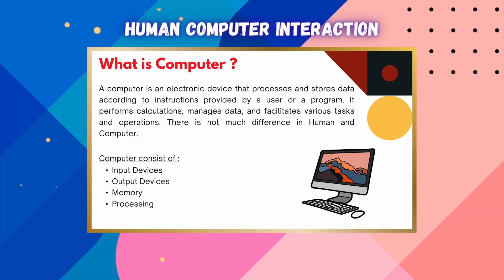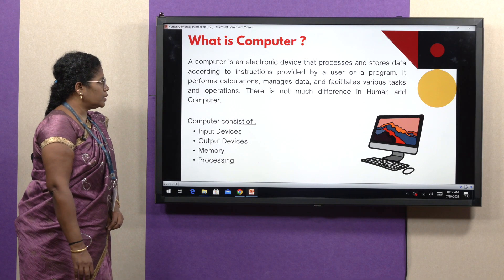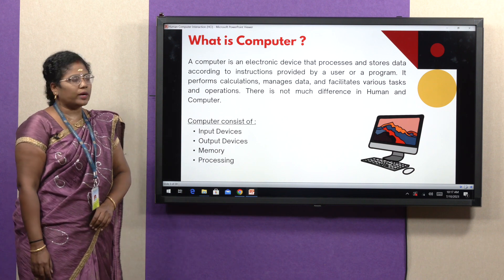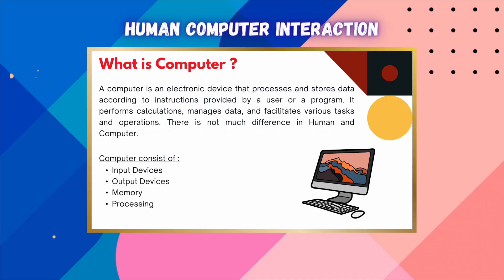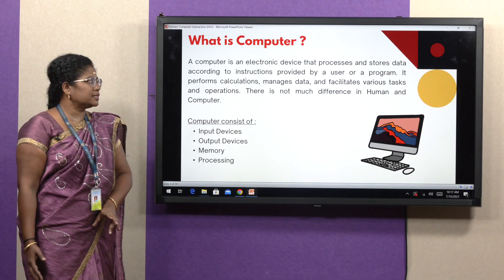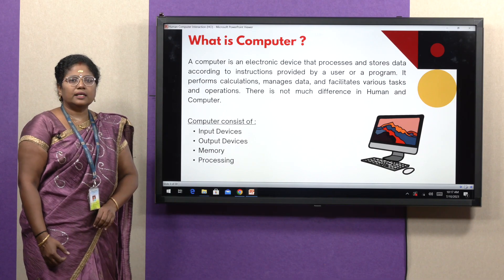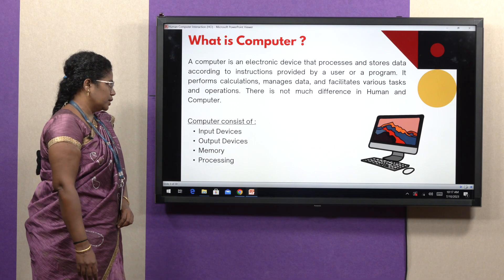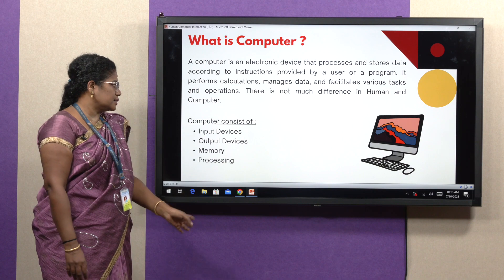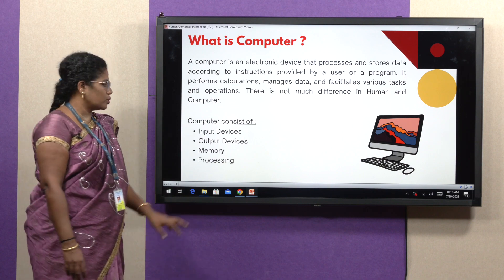A computer is basically an electronic device that processes and stores data, while instructions are provided by the user or a program. It performs calculations and manages data, and it is able to do tasks and operations. A computer consists of input devices, output devices, memory, and processing.